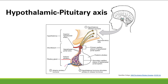The hypothalamic pituitary axis is the most high-yield topic in the endocrine system — the very most high-yield — and it's also very useful for the reproductive system. This whole system is in the brain. When we magnify it, we have the hypothalamus here, then the pituitary gland, with the anterior pituitary and the posterior pituitary.